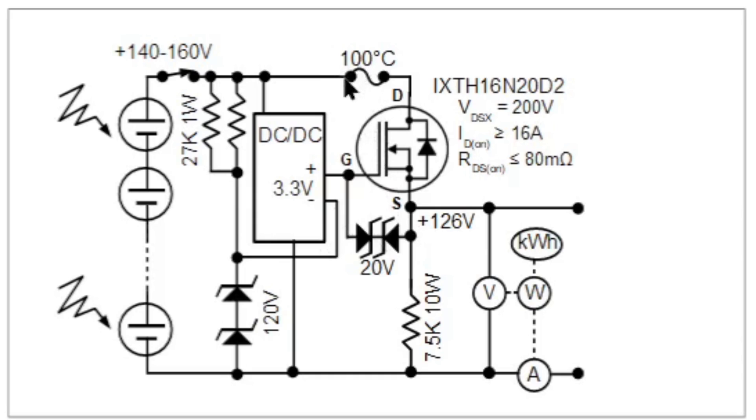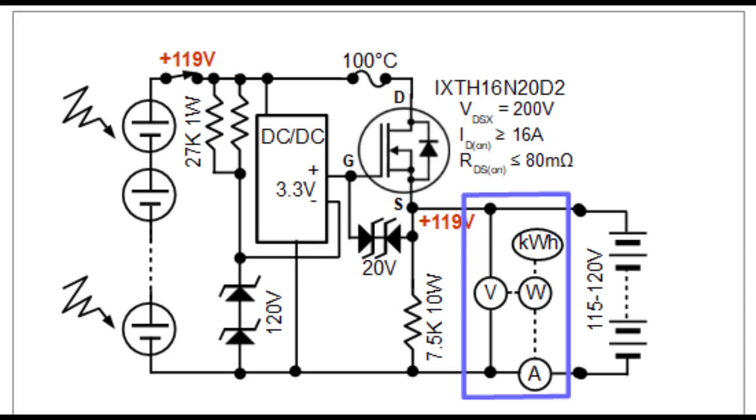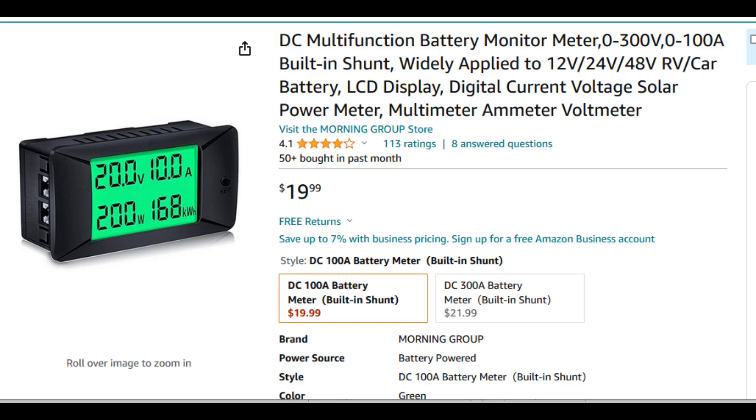A thermal fuse mounted directly on the MOSFET protects the MOSFET from overheating, in case the BMS fails to disconnect the battery at full charge and pushes the MOSFET into partial conduction. A digital multimeter connected to the output measures the charging voltage, current and power, and tracks the number of kilowatt hours delivered to the vehicle.